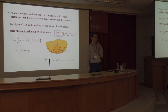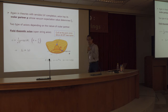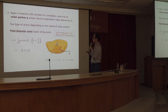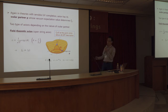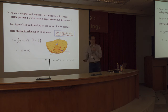In theories with a UV completion, for each axion there exists a scalar partner whose vacuum expectation value essentially determines the axion decay constant. You can consider two different types of axions depending on the physical nature of this scalar partner. One is the field theory axion, for which the axion a appears as the phase of some complex scalar field φ, and its scalar partner is just the modulus of that complex scalar.